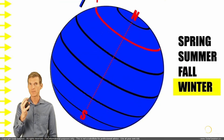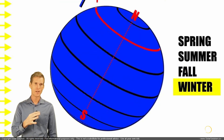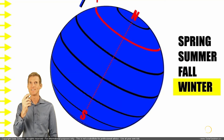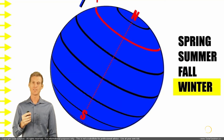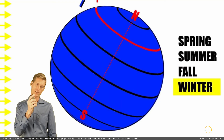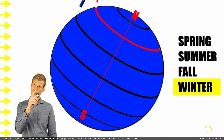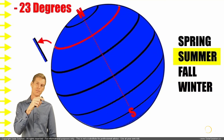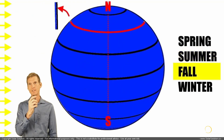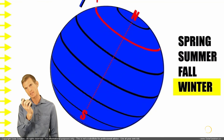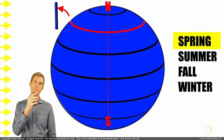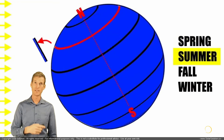To summarize this in a simplified way: during the summer on the northern hemisphere, the axis of the world is tilting minus 23 degrees. Summer is minus 23. During the fall, that's zero degrees. During the winter, it's plus 23 degrees. During the spring, it's zero degrees again. And then during summer, it's minus 23 degrees once more.